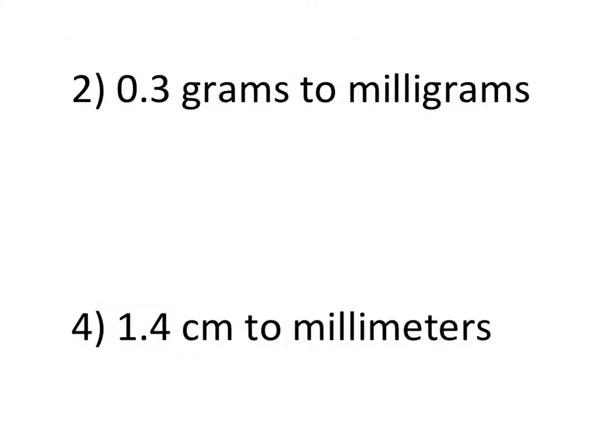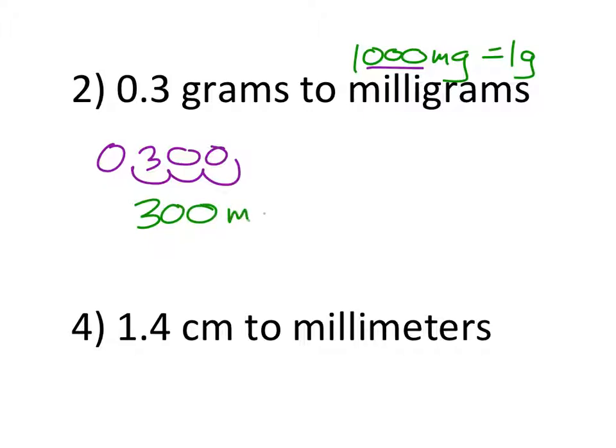So number two. This is grams and we want to change this to milligrams. There's a thousand milligrams for every one gram. So what this means is we're going to move this decimal to the right. However many zeros there are right here in this conversion. So I got 0.3. I'm going to move it three places because I got those three zeros. One, two, three. And that becomes 300 milligrams.